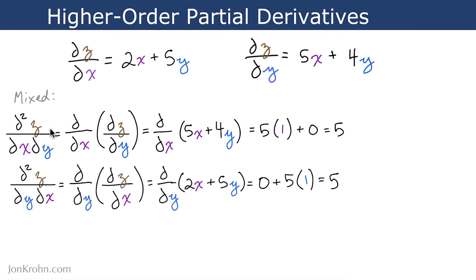And the other one is the other way around, of course. So we start with del z del x, and we differentiate it with respect to y. Here's how we annotate it in the Leibniz notation. So del z del x, differentiate with respect to y. Now x is the constant — it becomes 0. 5y: 5 is the constant; y when we differentiate it becomes 1. 0 plus 5 times 1 is 5.